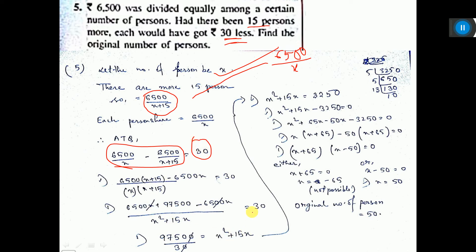If you solve it, then you will get the value of X as 50. X cannot be minus 65, because X we have considered as the number of persons. Number of persons cannot be negative.